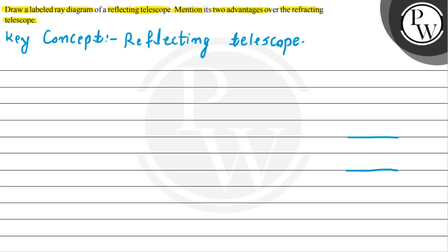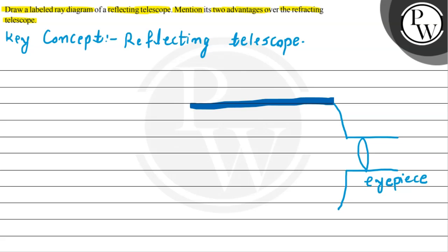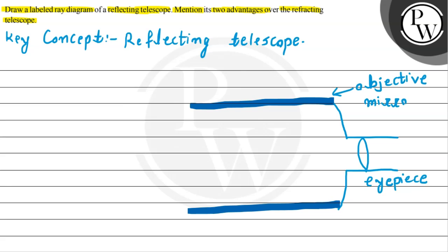So generally this part is the eyepiece. Then we have the objective mirrors. So let's suppose these are the objective mirrors. And the third part is the secondary mirror, which is located inside the objective mirror. So this is our secondary mirror.